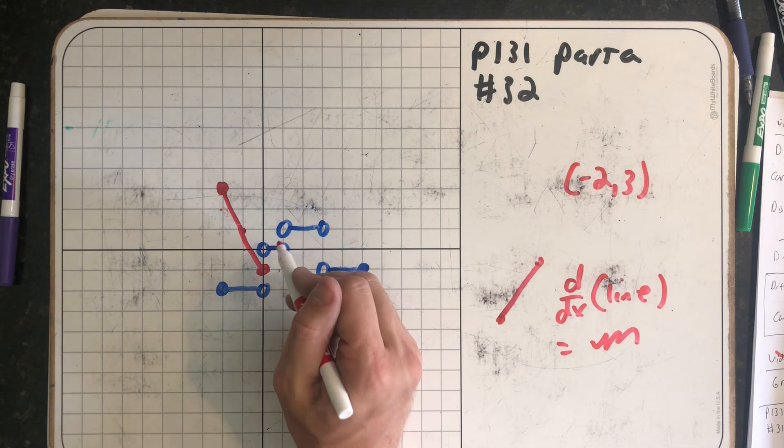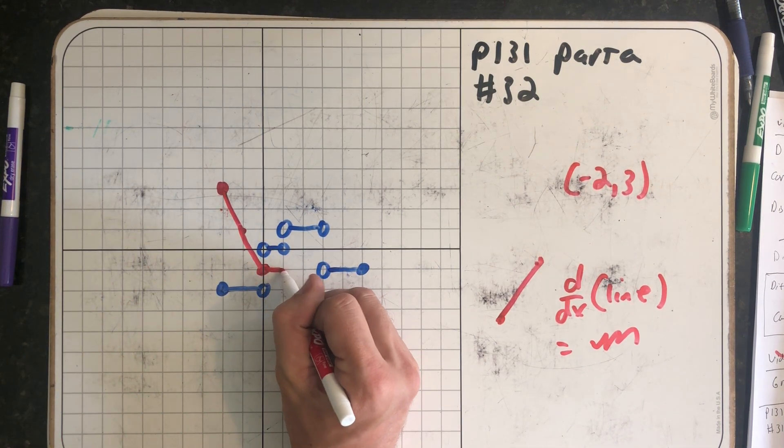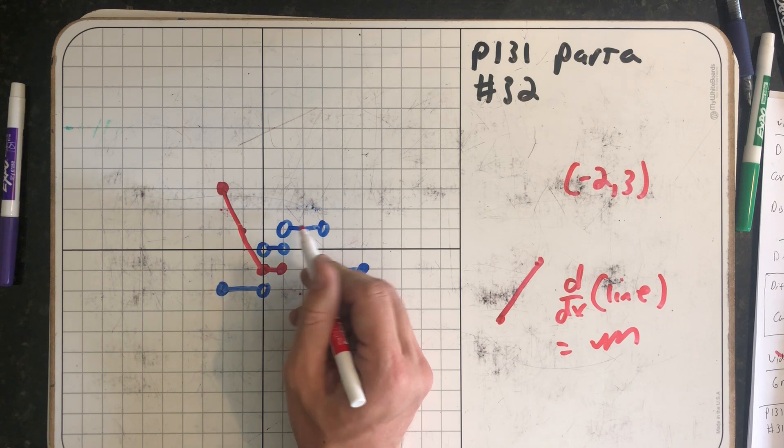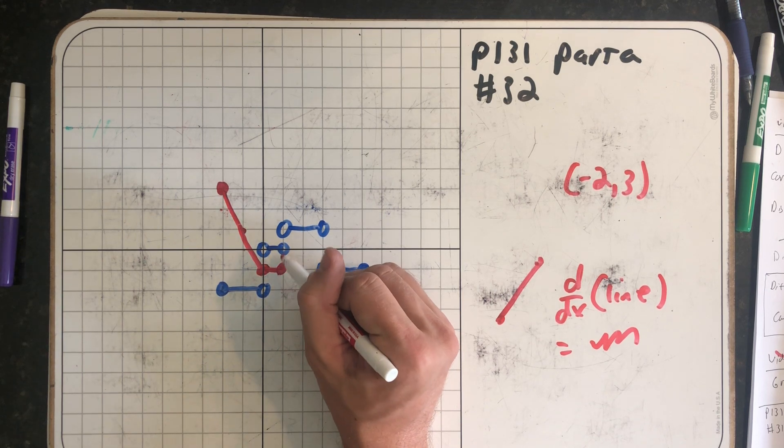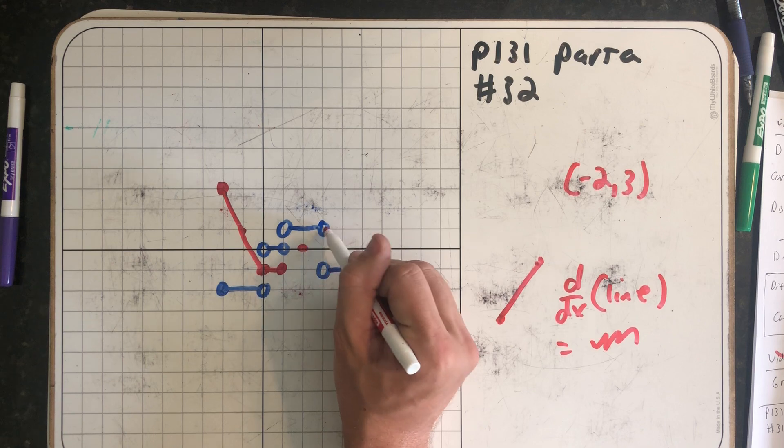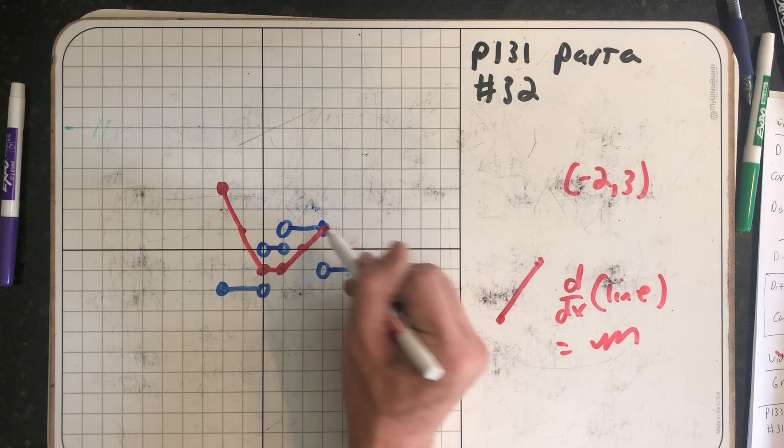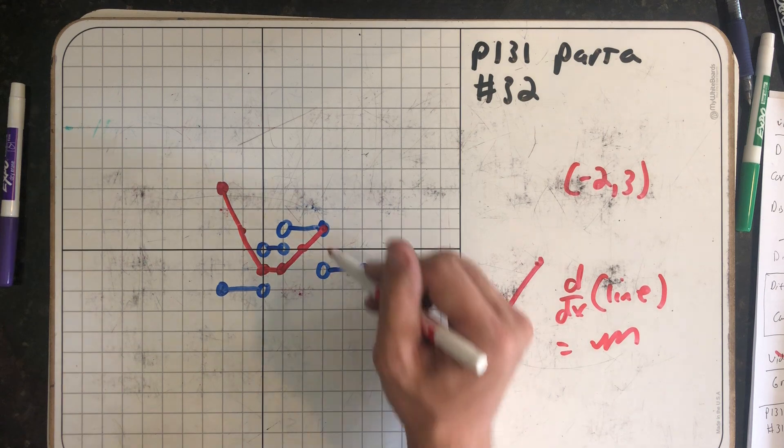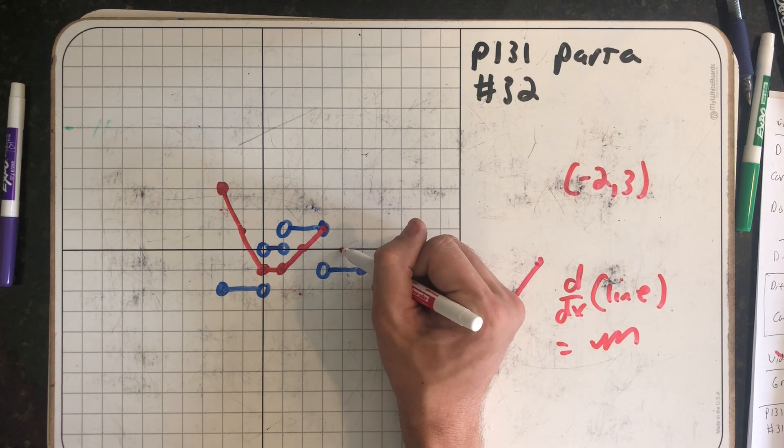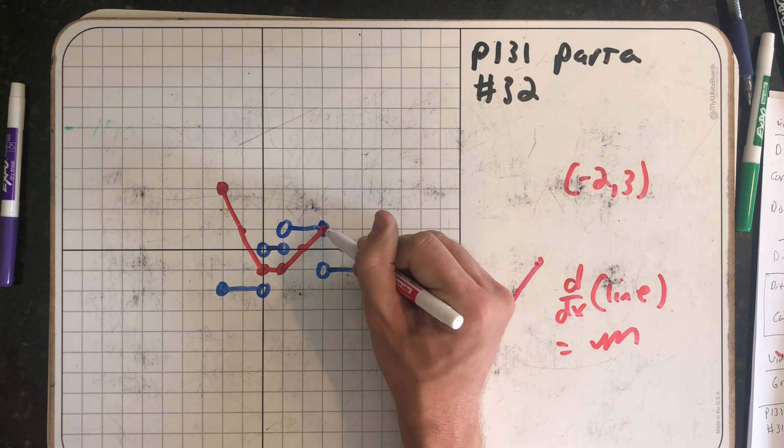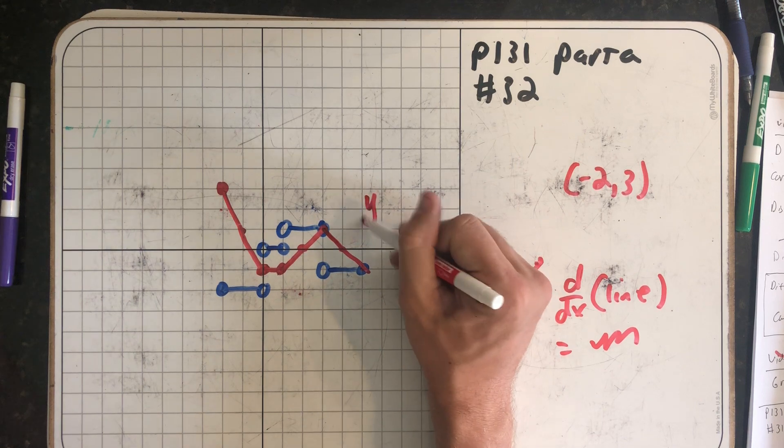My next line segment has a slope of 0, so that'll be a horizontal line. After that, I have a slope of 1: up 1 and over 1, up 1 and over 1. And then finally, I have a slope of -1. And there is my function.